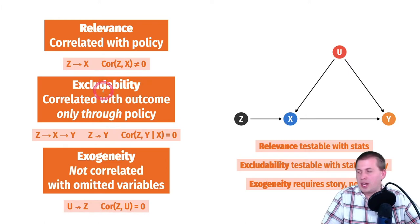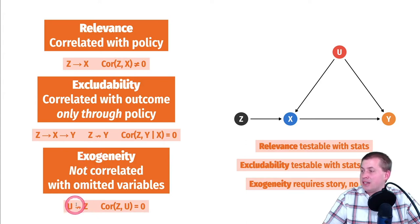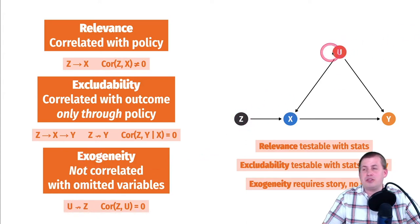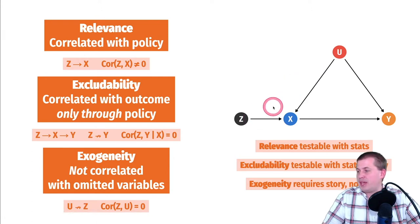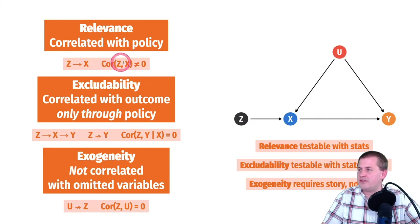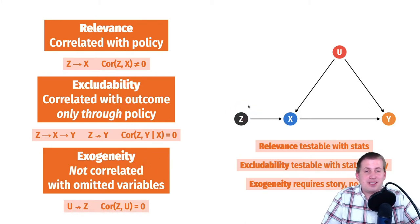Exogeneity means z is not connected to u — there's no arrow between all of these unmeasured things and the instrument. There should be no arrow from u to z and no correlation between u and z either. That's the formal definition of these three criteria: relevance, excludability, and exogeneity.